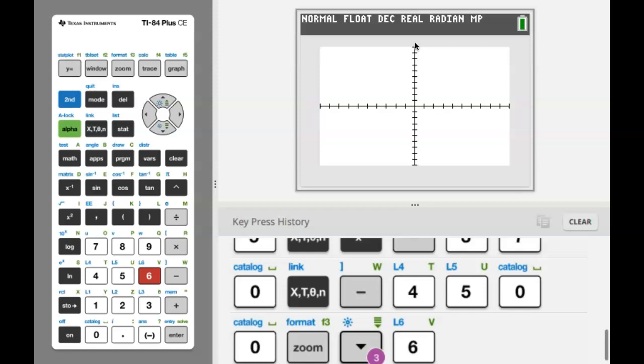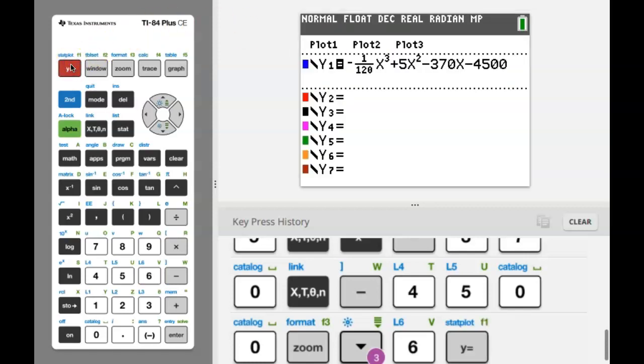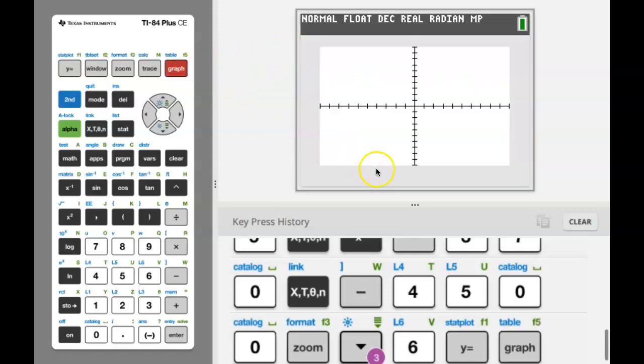So I always like that you start with a standard viewing window because you never know what problem you were on previously and how your window may be slightly different from a previous problem or maybe even somebody else borrowing your calculator. And you'll notice right away that I don't see anything. But if I go back to my function and actually take a look at it notice that when x is equal to zero if I put zero in for all these x's I have negative 4,500 so my y-intercept is negative 4,500. So looking at my graph since my y-axis only goes down to negative 10 it's no surprise that I'm not seeing much of this graph right now.